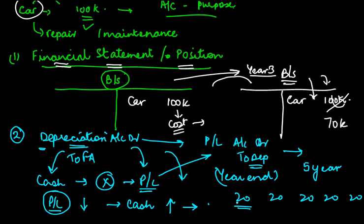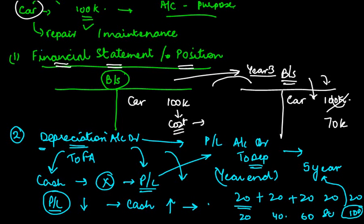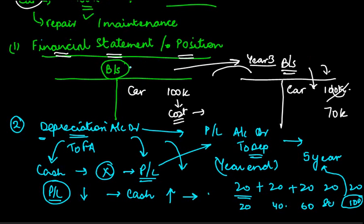So first year 20, second year 20 plus 20, then 40 plus 20, and 60 plus 20, and then 80 plus 20. So at the end of five years you would have accumulated 100k. And if after five years this car cannot be used and you want to buy a new car, instead of actually taking out 100k at one go, what you have done is you have saved that money over a period of time to provide for the replacement of an asset.